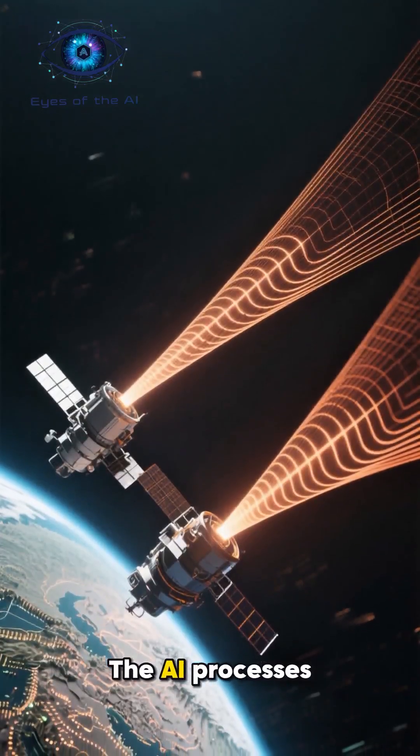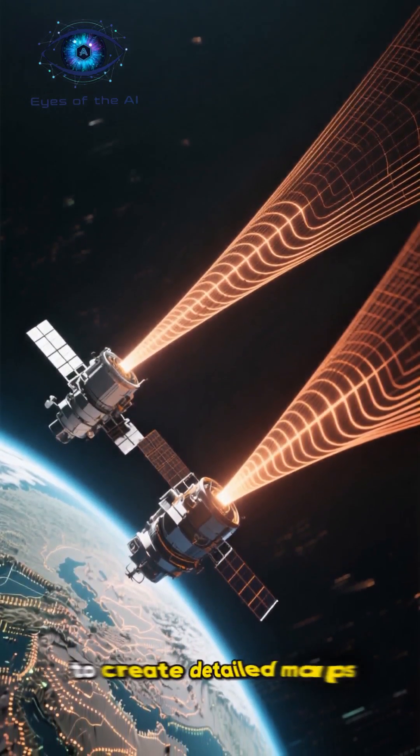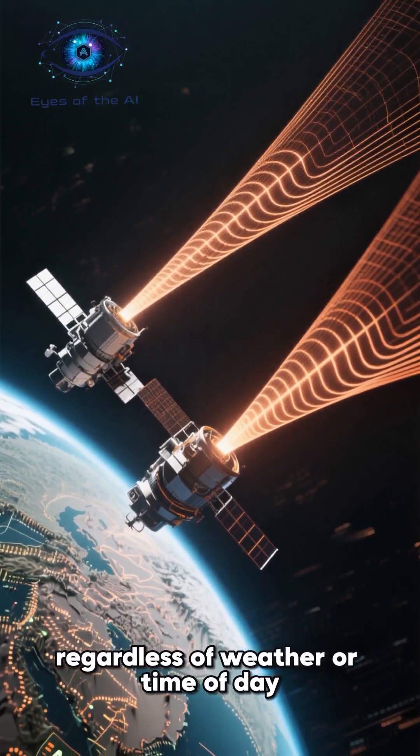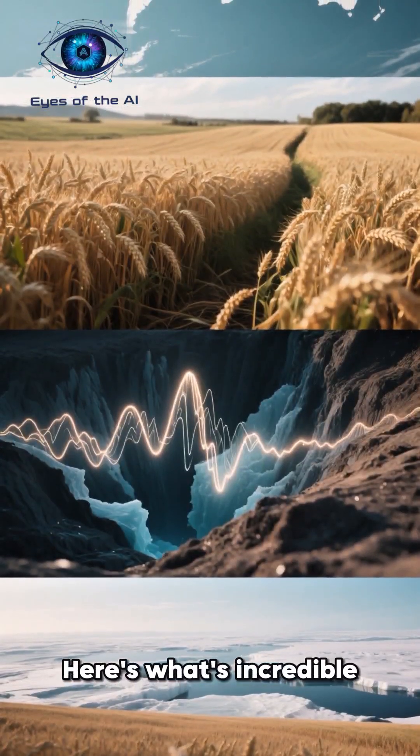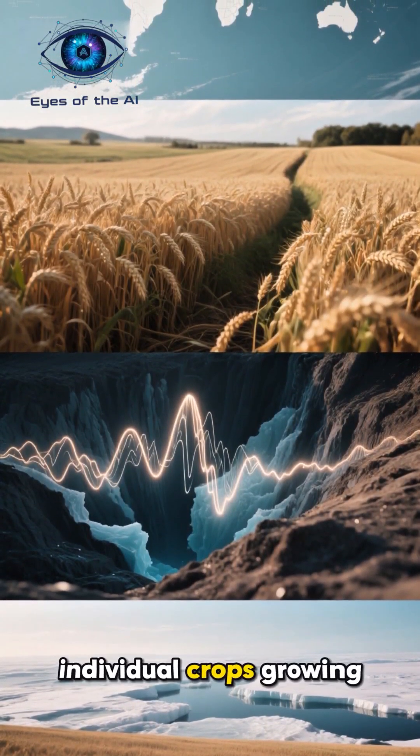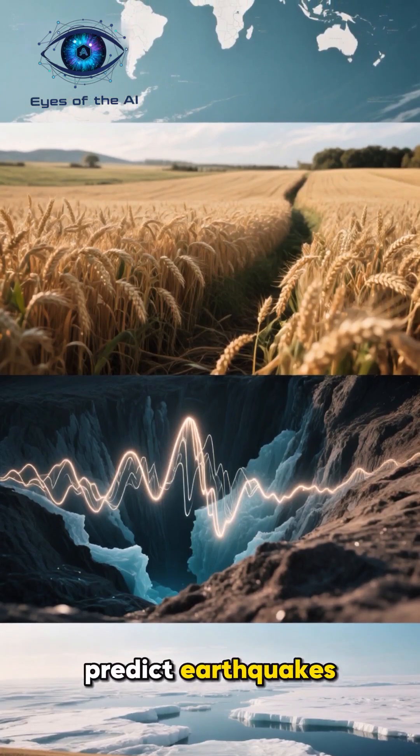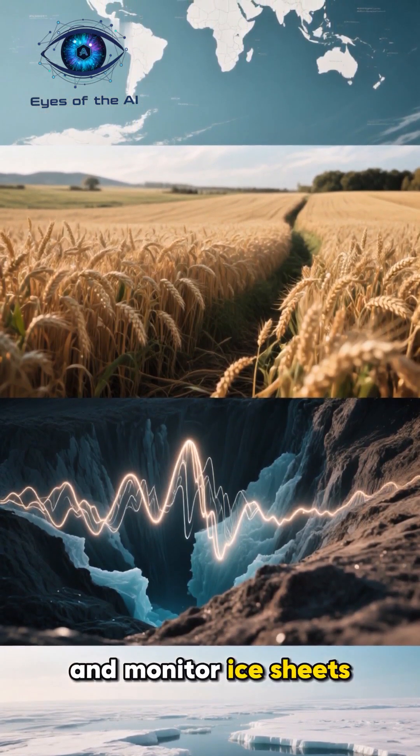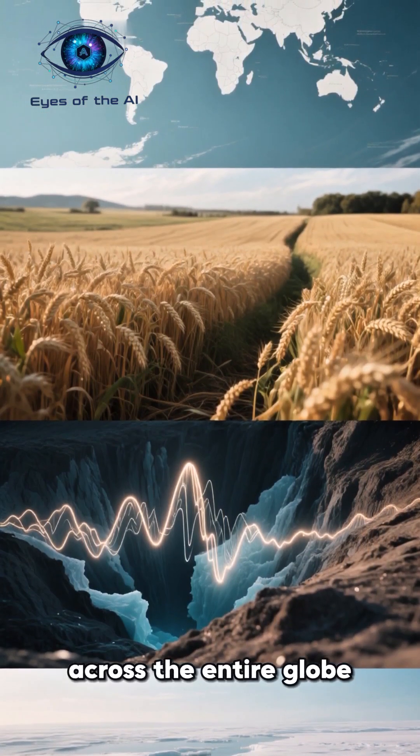The AI processes dual-band radar signals to create detailed maps regardless of weather or time of day. Here's what's incredible. It can track individual crops growing, predict earthquakes, and monitor ice sheets melting in real time across the entire globe.